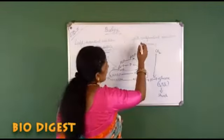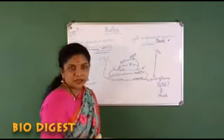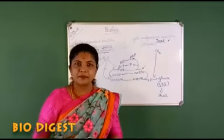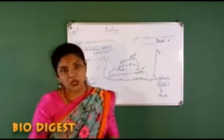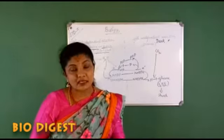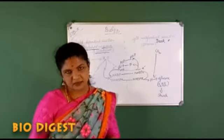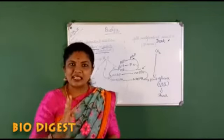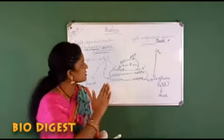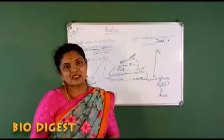This side is the light-independent reaction, otherwise called the dark reaction. Why is it called the dark reaction? It is called the dark reaction because in this particular phase of photosynthesis, light is not necessary. It doesn't mean this phase is taking place during night. It simply means that light is not necessary for this phase of photosynthesis.